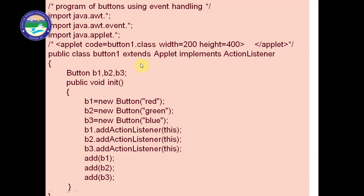We write 'this' as the argument because the same class is implemented by ActionListener. 'This' means the object of the current class — Button1 is both an Applet and an ActionListener because we are extending from Applet and implementing ActionListener. So we add b1, b2, and b3 to the applet using 'add', and these three buttons are also associated with the ActionListener.